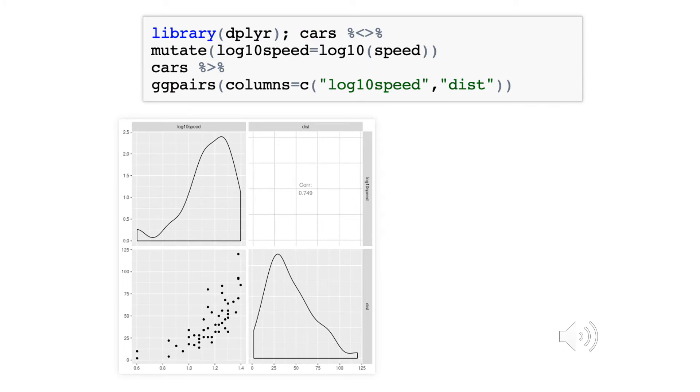As we learned in the previous module, we can also create new variables and inspect those as well. In this case, we've created a log10 transformation of the variable speed.